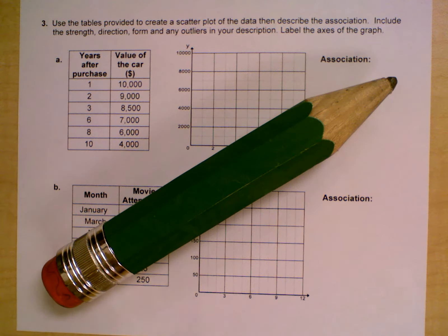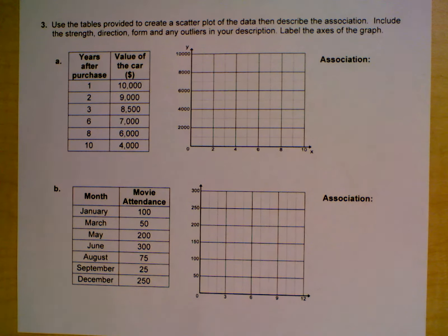All right, question number three. Before you get started on question number three, I've got my example here of my very short but fat pencil. This could be an example of why there was an outlier.